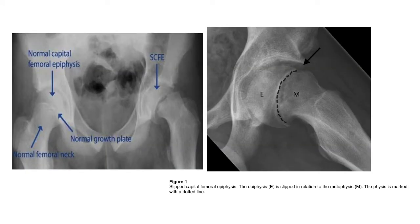Let us quickly cover the knowledge you need to approach a case of slipped capital femoral epiphysis. The metaphysis and neck of the femur has moved superiorly in relation to the physis, because the growth plate has slipped. In the frog leg or lateral view, the physis has moved back in relation to the metaphysis. So slipped capital femoral epiphysis means the physis moves back and down in relation to the metaphysis.